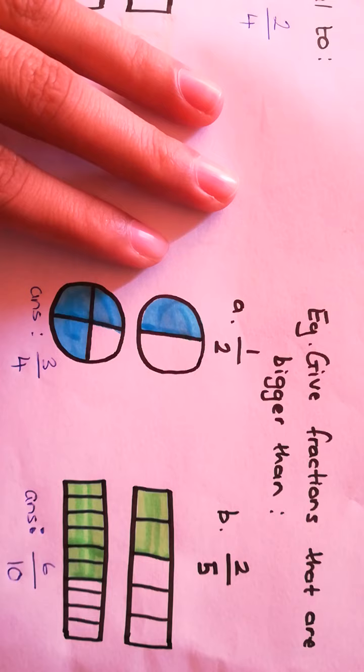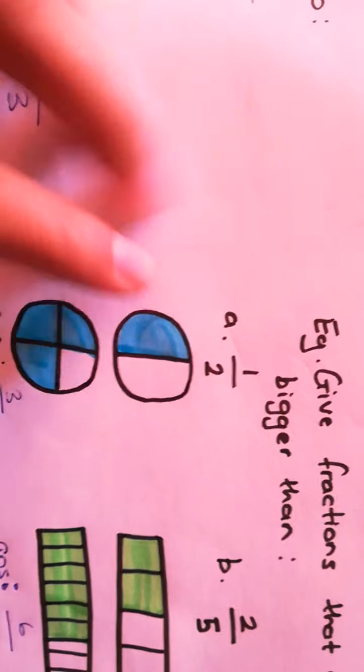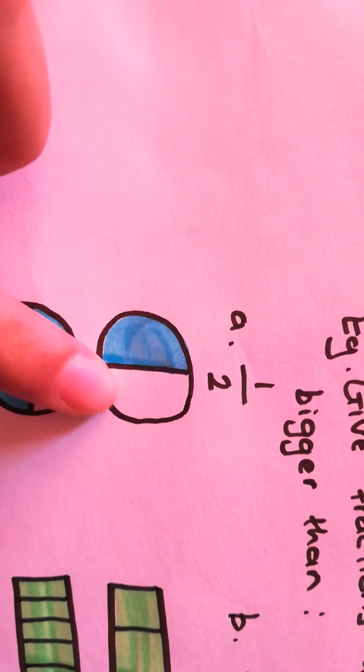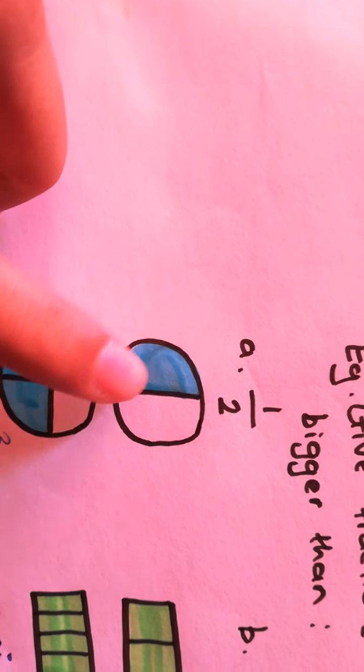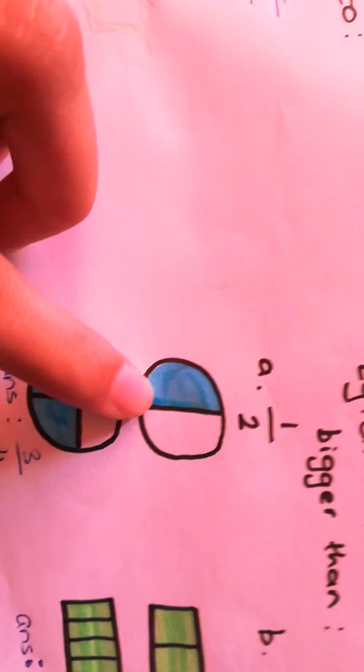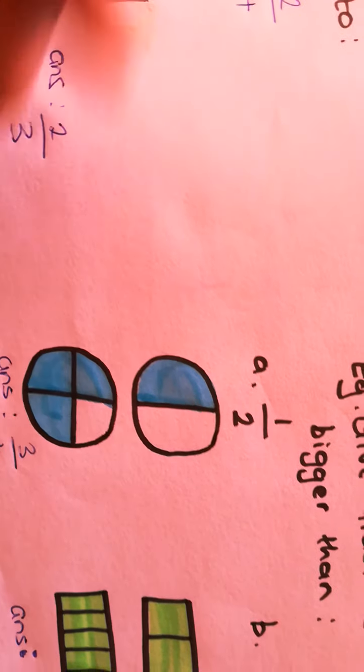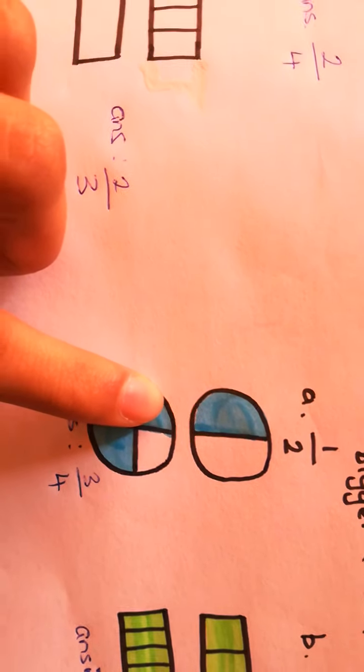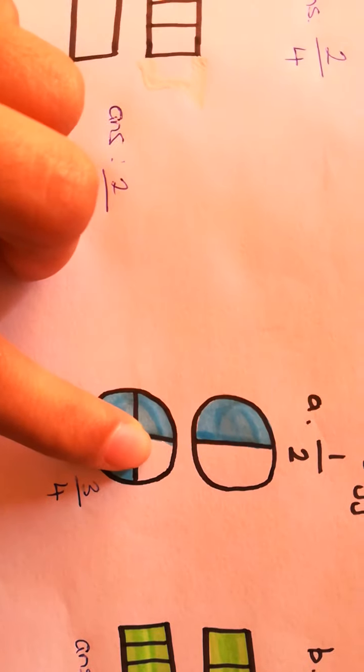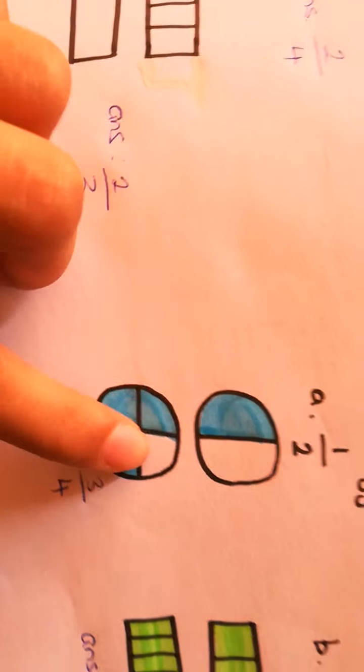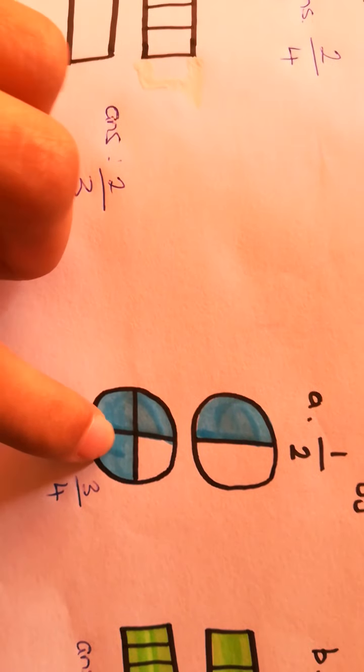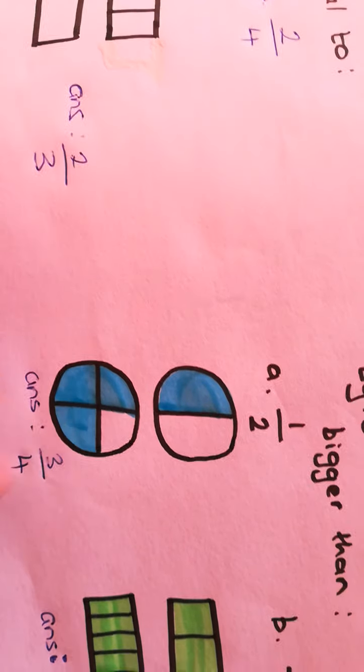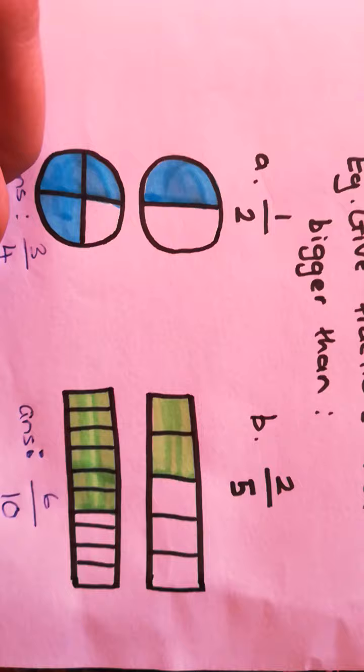Give fractions that are bigger than half and two out of five. If you look here I drew the diagram for half. You can draw any type of diagram you want. I drew the exact same diagram and just split it into more parts and colored in more. Can you see? The empty space here is smaller than here. This shows that this diagram is actually bigger than a half and this diagram is three over four or three quarters. Let's look at another example.